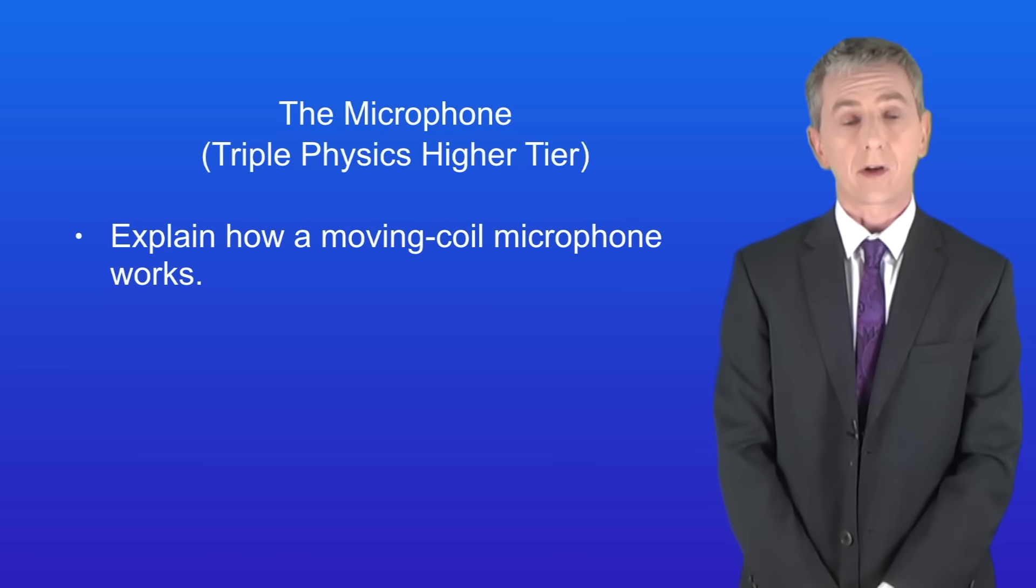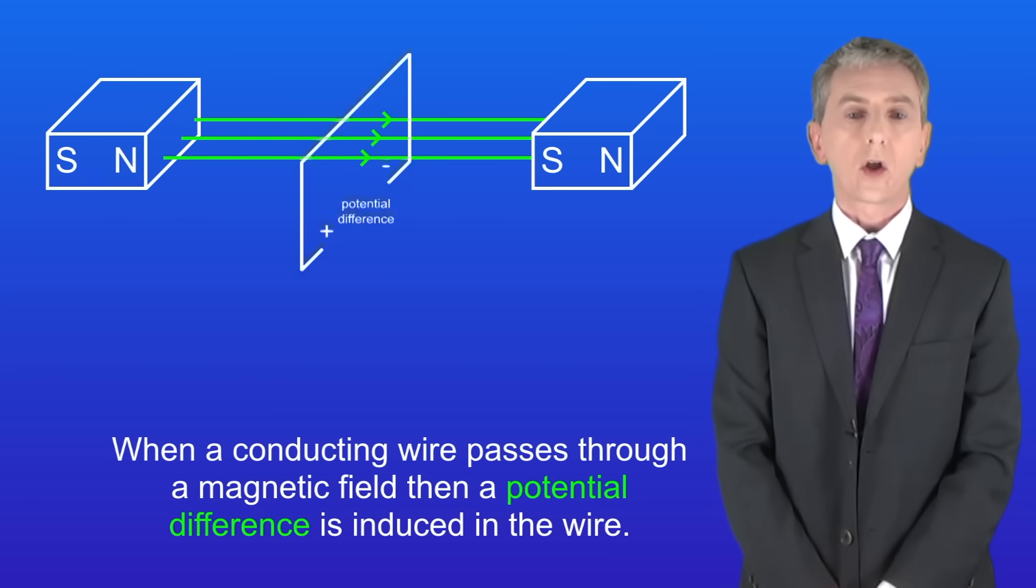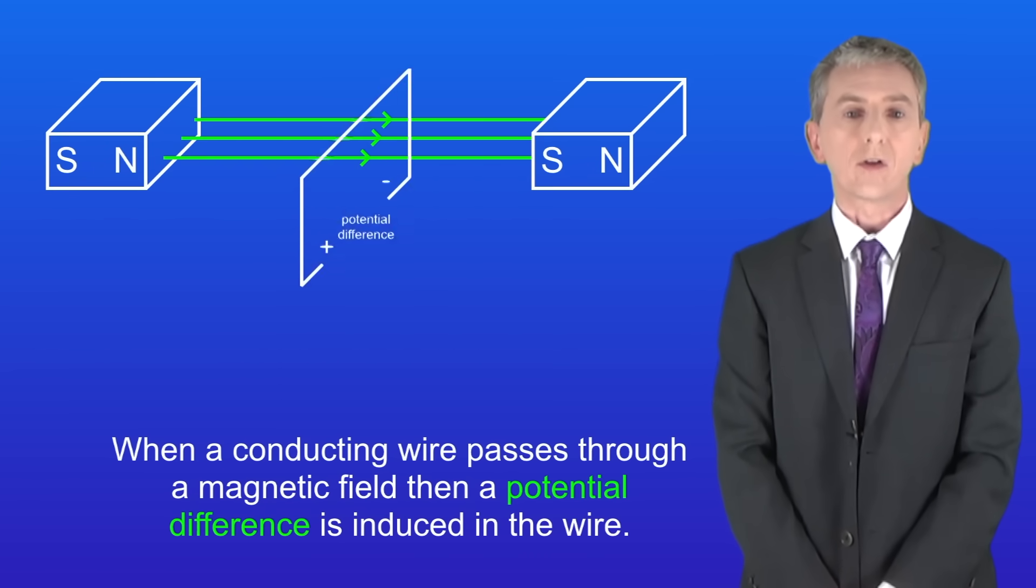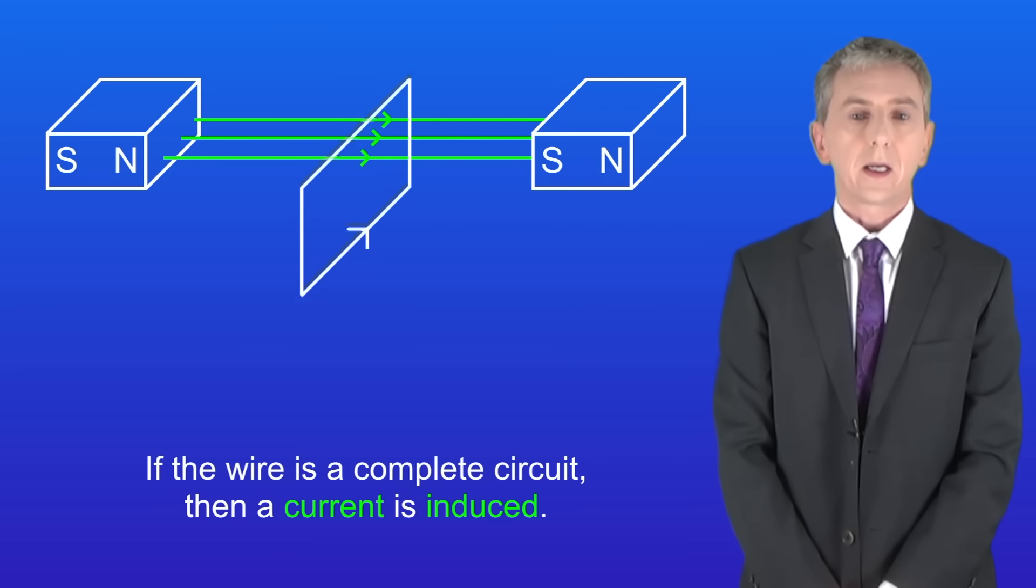Over the last couple of videos we've looked at the generator effect. Remember that when a conducting wire passes through a magnetic field then a potential difference is induced in the wire. And if the wire is a complete circuit then a current is induced.